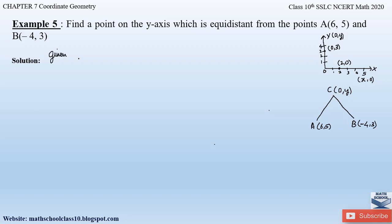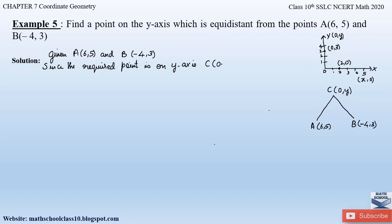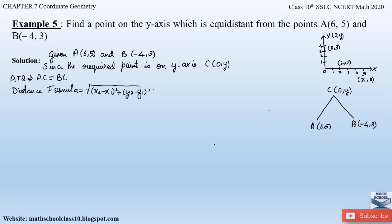So first, let us write down: given point A is at (6, 5) and point B is at (-4, 3). Since the required point is on the y-axis, let us assume the point to be (0, y). According to the question, point C is at equidistance from point A and point B. Therefore, AC = BC. Applying the distance formula, which is given by the square root of (x₂ − x₁)² + (y₂ − y₁)².